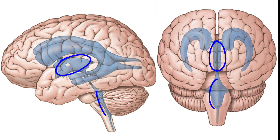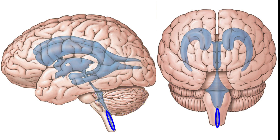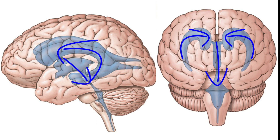The third ventricle communicates with the fourth ventricle through a slender canal called the cerebral aqueduct. The fourth ventricle occupies the space between the brainstem and cerebellum. Inferiorly, the fourth ventricle narrows and extends down the center of the spinal cord as a space called the central canal. While anatomists describe the ventricles as separate regions, it's better to consider them as an interconnected single network of chambers and canals continuous with the central canal of the spinal cord.